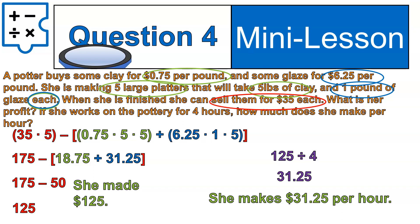Now for the second part: how much is she making per hour if it took her four hours? She made $125, so we divide by four — her final answer is $31.25 per hour. This question was really complicated with two parts, and we had to make sure we answered all of them.